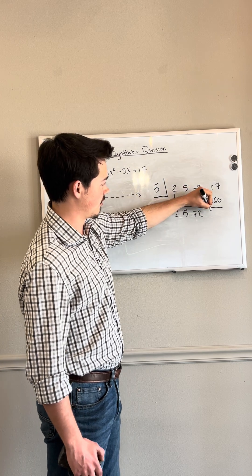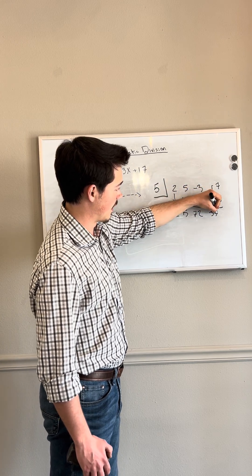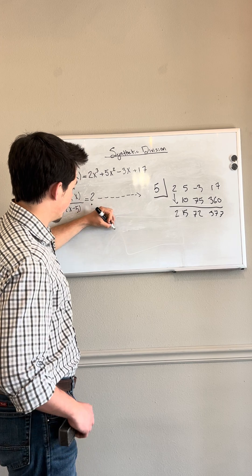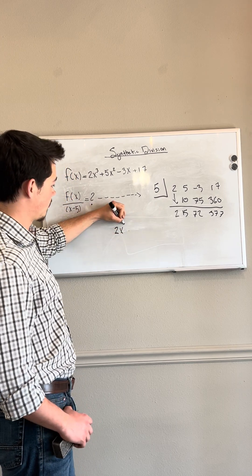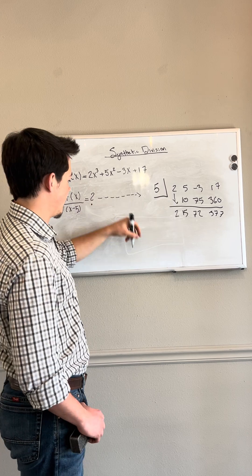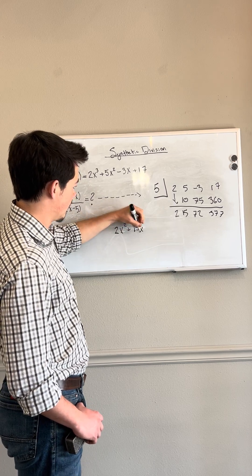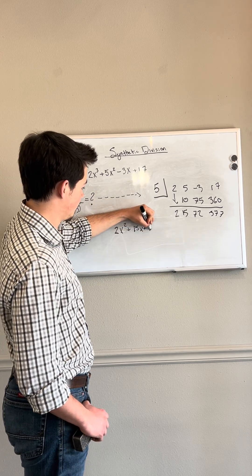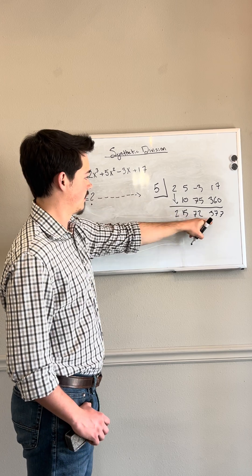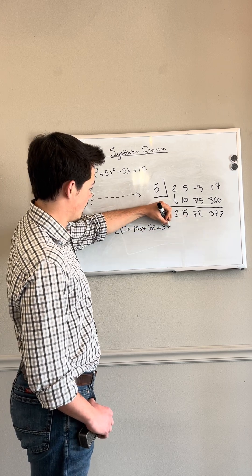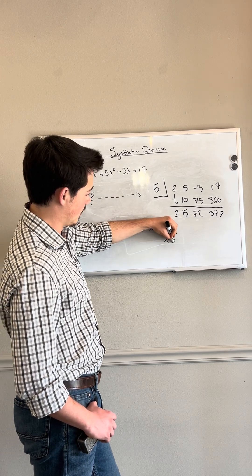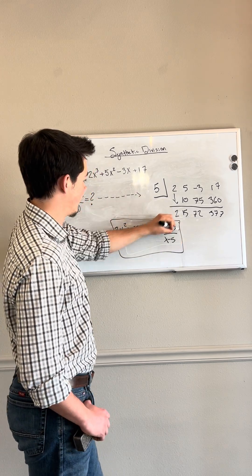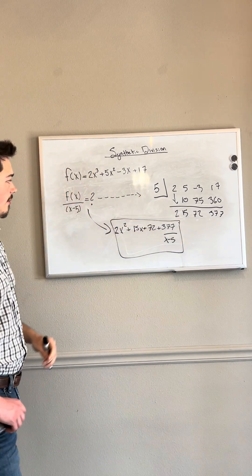And then we sum these last two numbers for our final new value. And each of these four numbers will give us our new result, which is 2x squared plus 15x plus 72 plus 377, divided by our original divisor, x minus 5. And that is our final solution to the original problem.